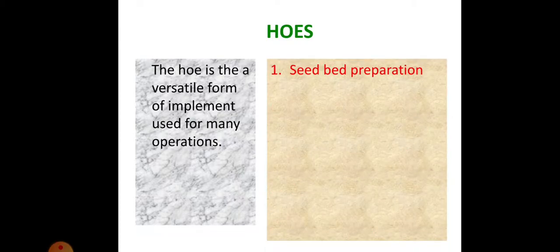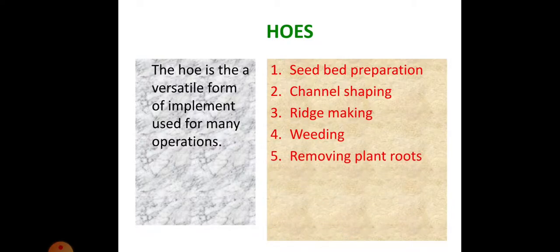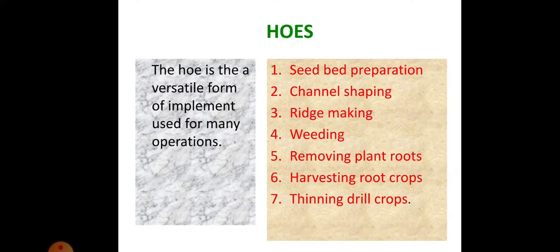Now, hoes. Hoes are used for weeding purposes. The hoe is a versatile implement used for many operations: seedbed preparation, channel shaping, ridge making, weeding, removing plant roots, harvesting root crops, and thinning drill crops.